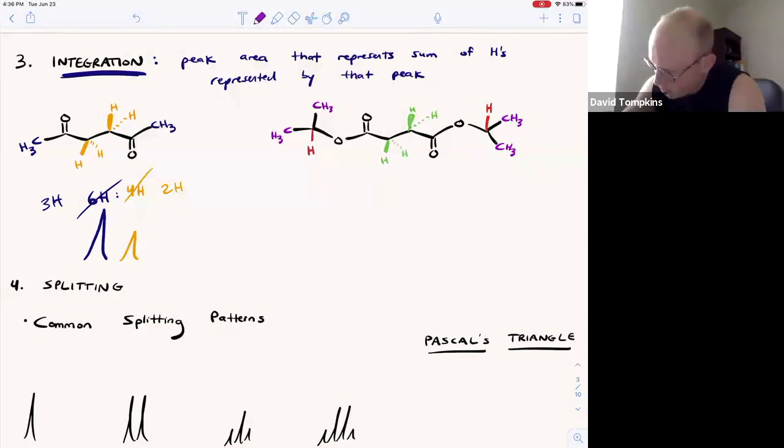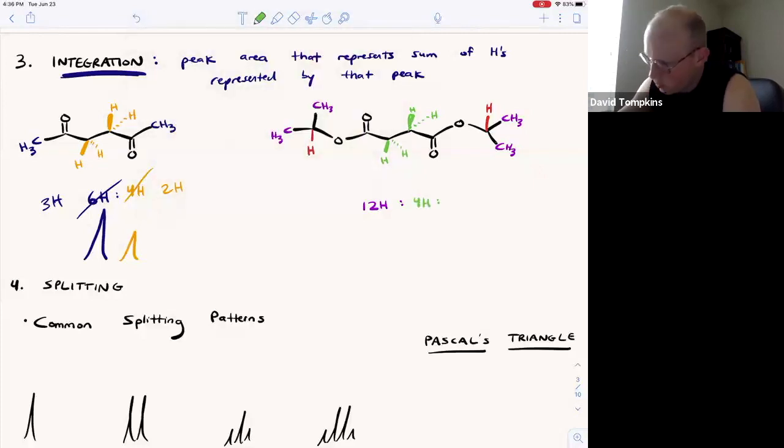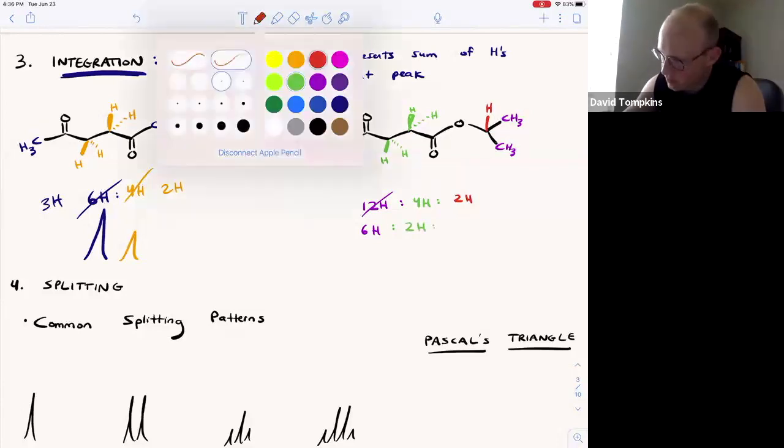So what we would see initially is that there's a 12 hydrogen relative to four hydrogen relative to two hydrogen ratio. And so the simplified ratio, the integral would report, is six relative to two relative to one.